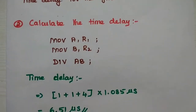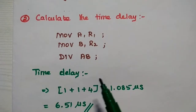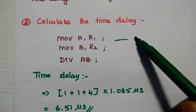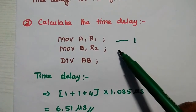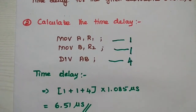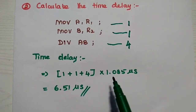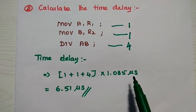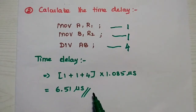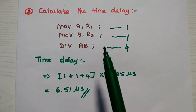Next, we calculate the total execution time period for a second program. In the same way, we obtain the total execution time: the MOV instruction requires one machine cycle, another MOV requires one machine cycle, and the DIV instruction requires four machine cycles. Adding all these values and multiplying by the machine cycle period of 1.085 microseconds, we get 6.51 microseconds as the total execution time period for this program.